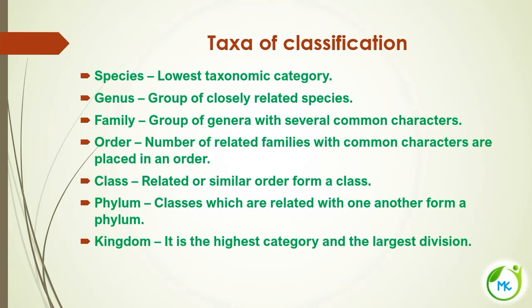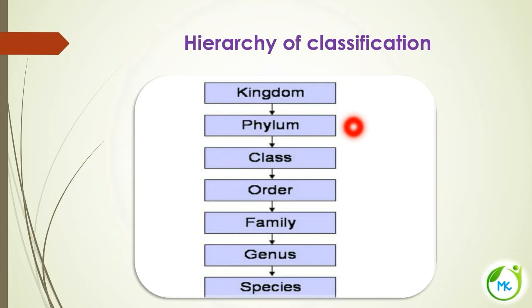The different taxa of classification are: Kingdom, Phylum, Class, Order, Family, Genus, and Species. The lowest taxonomic category is species and the highest category is kingdom. The hierarchy of classification is: Kingdom, Phylum, Class, Order, Family, Genus, and Species. You should not change the order when writing the hierarchy of classification.